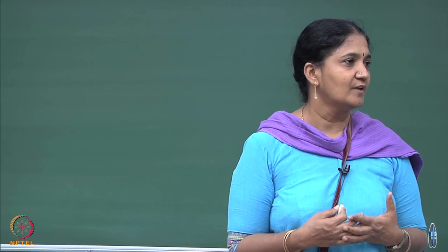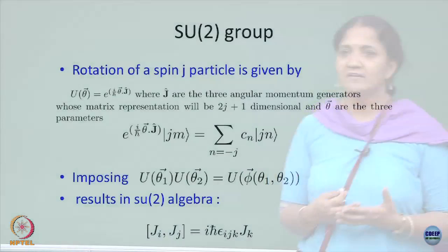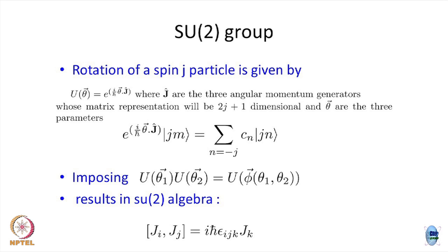The corresponding matrices will be 2×2 matrices. The number of constraints — if you subtract from 2×2 unitary matrices, which must satisfy the unitarity condition and determinant equal to 1 — you get the number of parameters, which is the number of real elements in the matrix. There are only 3, that is why the theta vector is formally written with 3 components: theta 1, theta 2, theta 3.